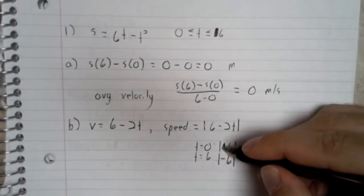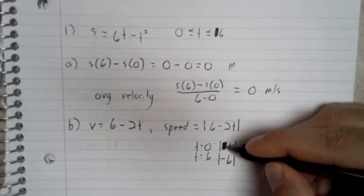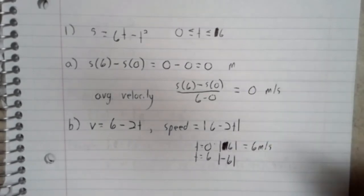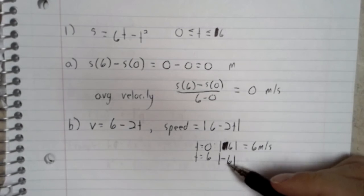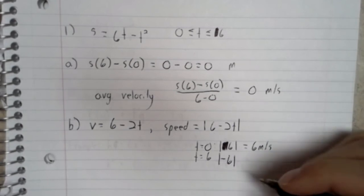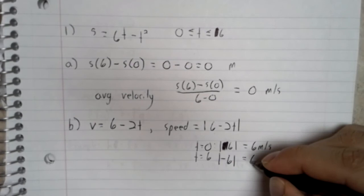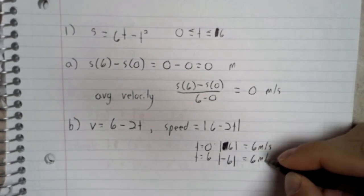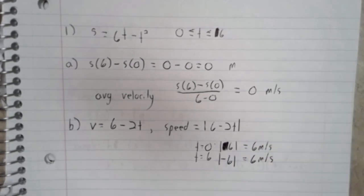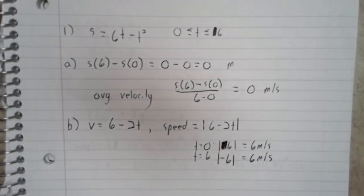You've got the absolute value. Yeah, that was supposed to be an absolute value sign. It made that look like a 16. The absolute value of negative 6 is, again, a positive 6.